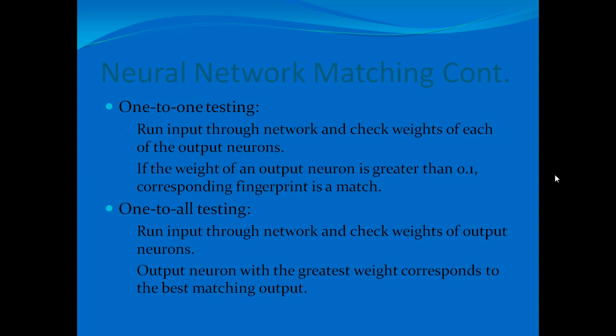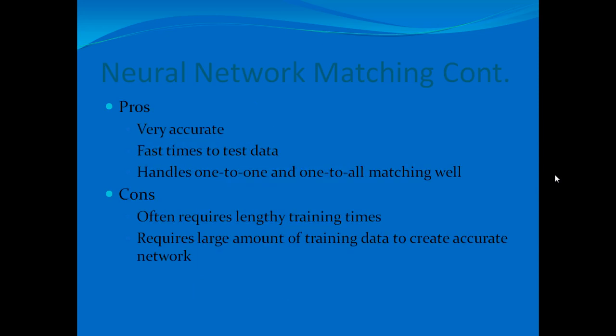One-to-one testing with the neural network involved running an input through the network and checking the weights of the output neurons. If the weight of an output neuron exceeded 0.1, the corresponding fingerprint was said to be a match — effectively performing 10 one-to-one comparisons simultaneously. For one-to-all testing, the output neuron with the greatest weight corresponds to the best matching fingerprint. Pros include high accuracy, fast test times, and strong handling of both matching types. Cons include lengthy training times and the requirement for large amounts of training data.